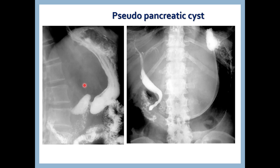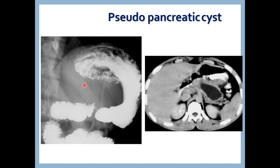On lateral view of barium meal follow-through: marked displacement of the stomach anteriorly by pseudopancreatic cysts. CT scan transverse section shows a cystic lesion in the region of the pancreas completely displacing the stomach anteriorly and compressing it — another picture of pseudopancreatic cysts on CT scan.